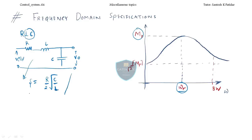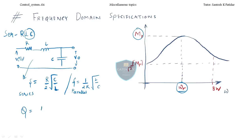If instead you have a parallel RLC circuit, the zeta you will get is 1 divided by 2R times the square root of L by C. Remember this. The quality factor Q, in terms of control system zeta parameter, is always 1 by 2 zeta. In terms of R, L and C it is 1 divided by R times the square root of L by C.